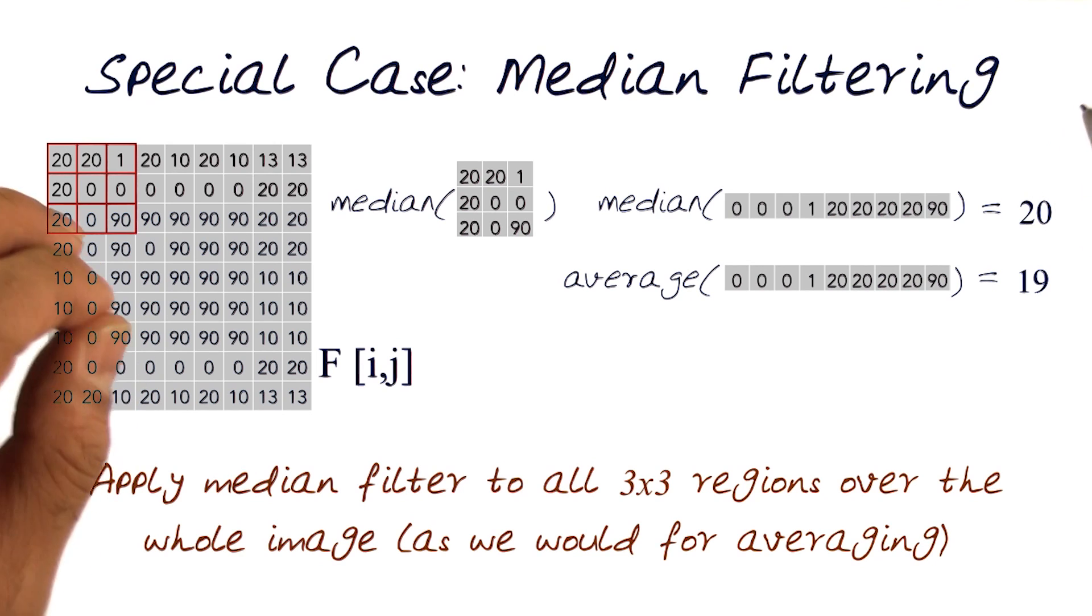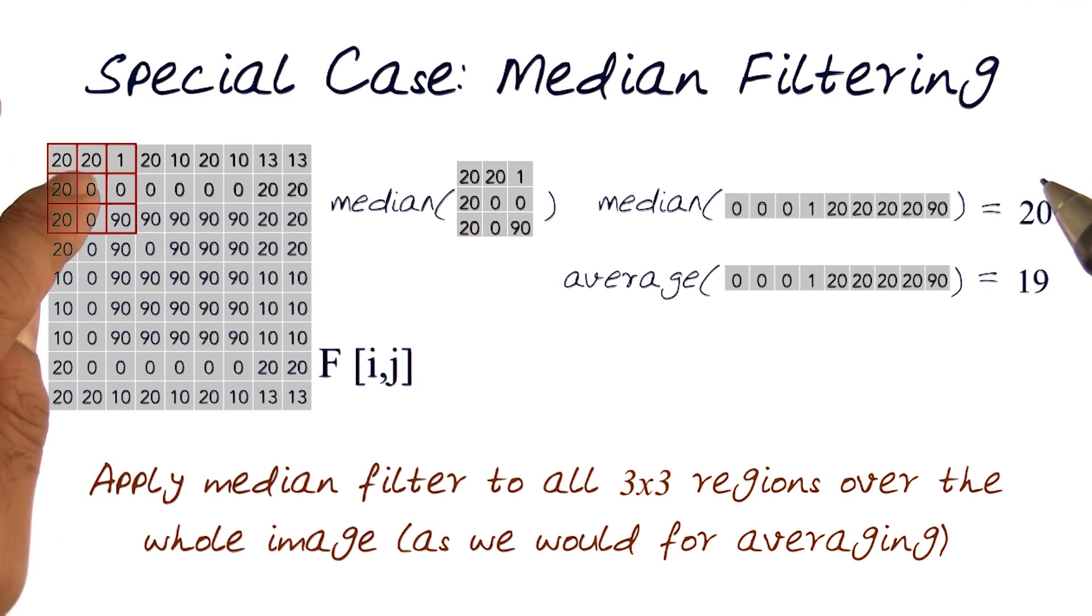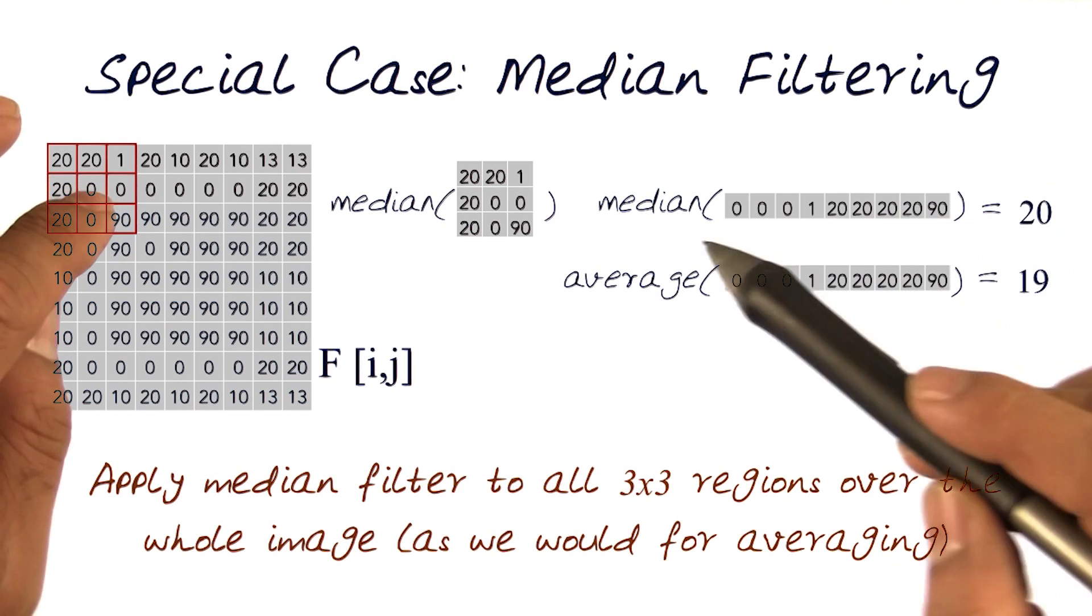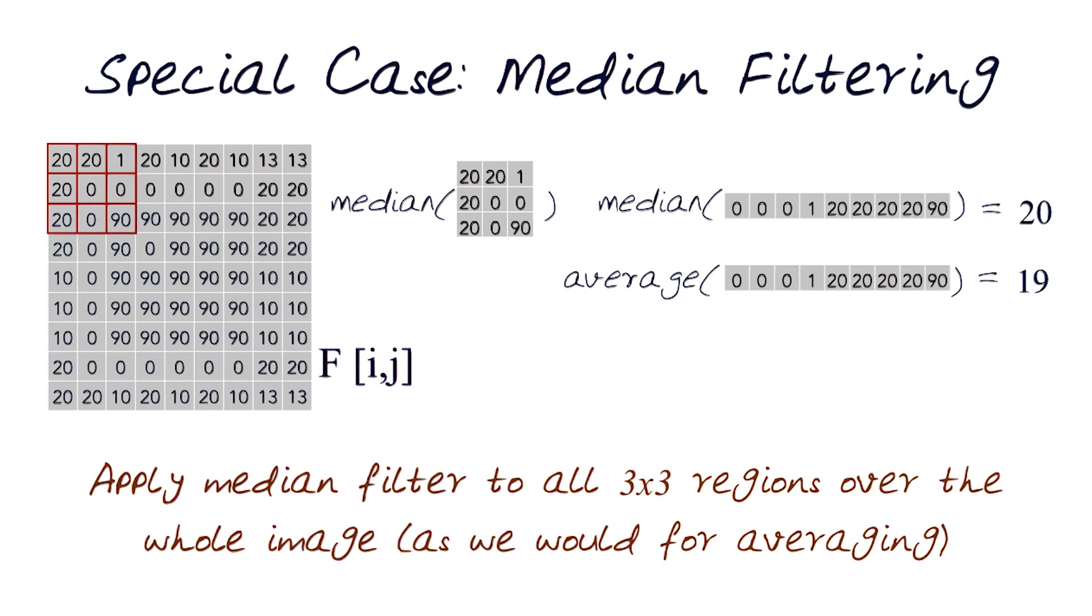So notice this is a little different. We're not doing cross-correlation as we did before. We're not actually putting the elements in. We're actually taking the elements 9 by 9 and running a separate process, a separate function on it to come up with a new value. So we're no longer doing the kernel, because in this case, in median filtering, there is no kernel. Kernel is actually a function rather than an image.